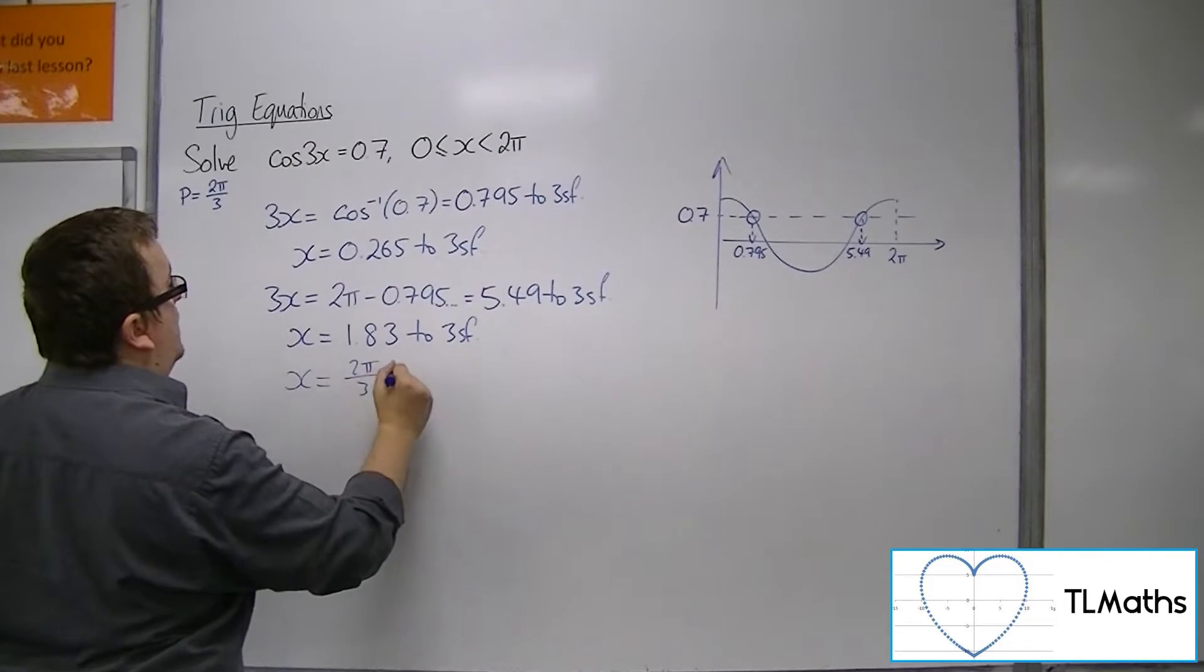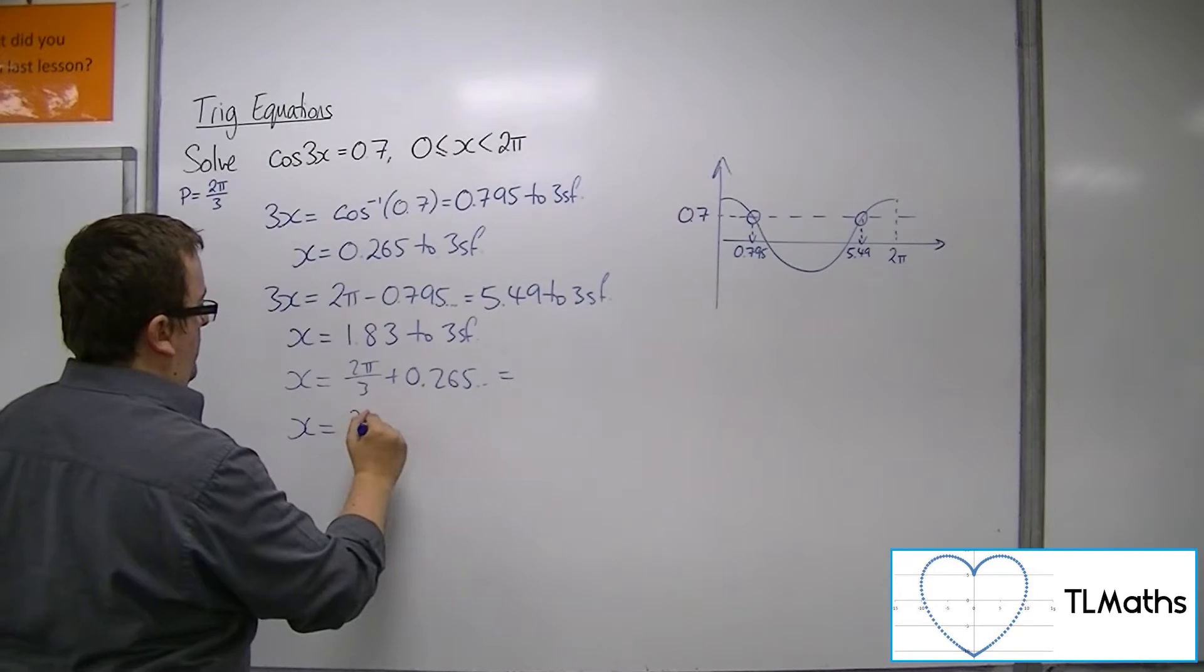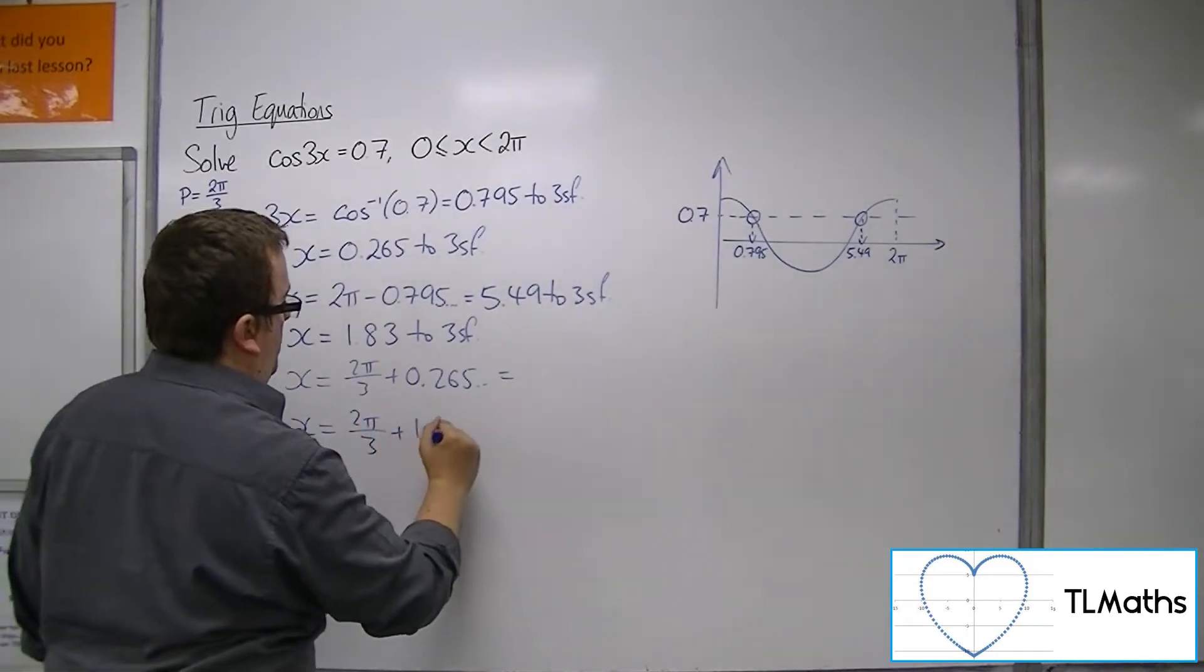So 2π/3 added to 0.265, and 2π/3 added to 1.83.